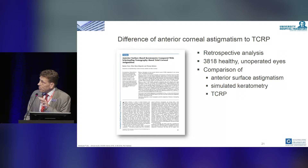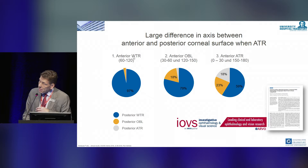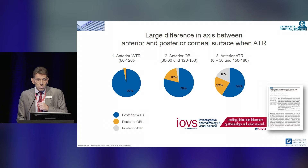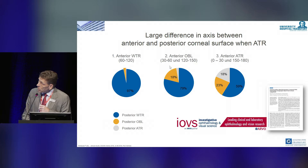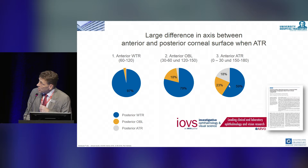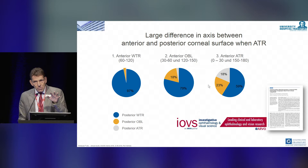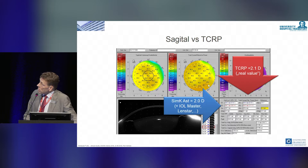This is the most interesting slide: if the anterior cornea showed with-the-rule astigmatism, most of the time the posterior cornea was also with-the-rule. With oblique anterior, there was more variety — 18% oblique with some against-the-rule. For against-the-rule cases, only 18% were against-the-rule, while the residual 59% were actually with-the-rule. So if you have against-the-rule eyes, you always have to take care. This shows the 2-diopter difference between SIMK and total corneal refractive power.